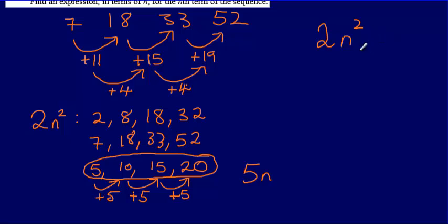So, my final answer to this question is going to be 2n² plus 5n. And that's the final answer.